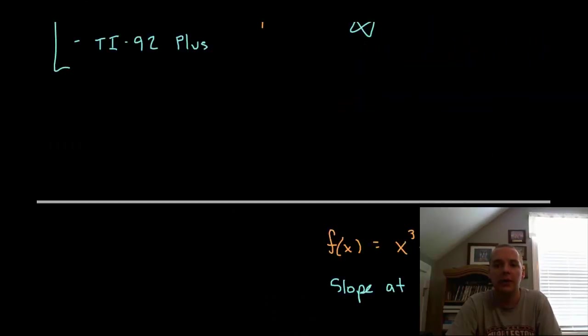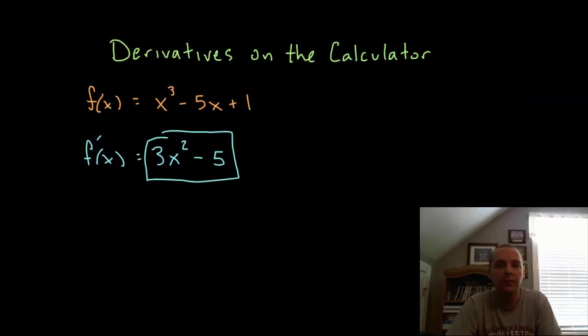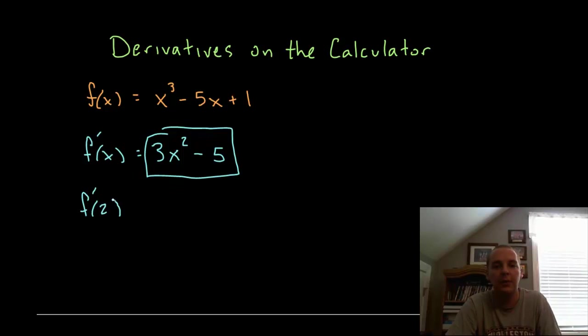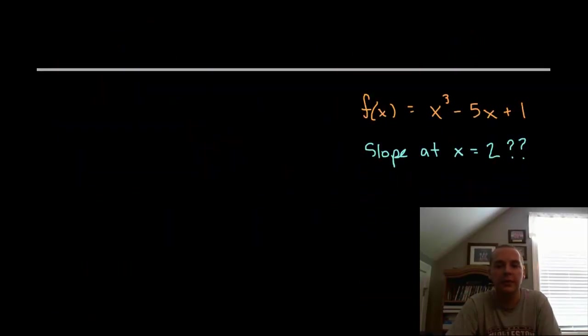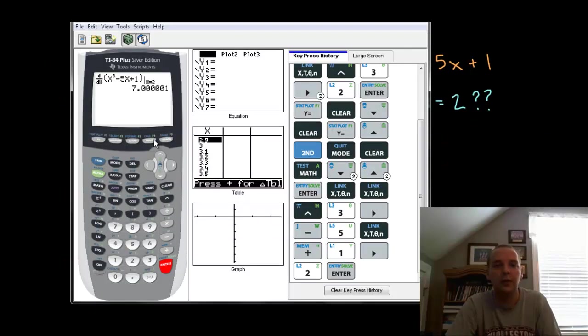Now if we had gone back and done this by hand, sure enough if we had looked for f prime at 2, then 3 times 4, minus 5, that's 2 squared, times 3, minus 5, that would be 7. So you can do it by hand, or you can do it using the calculator, and so this is just a pretty straightforward way of doing it.